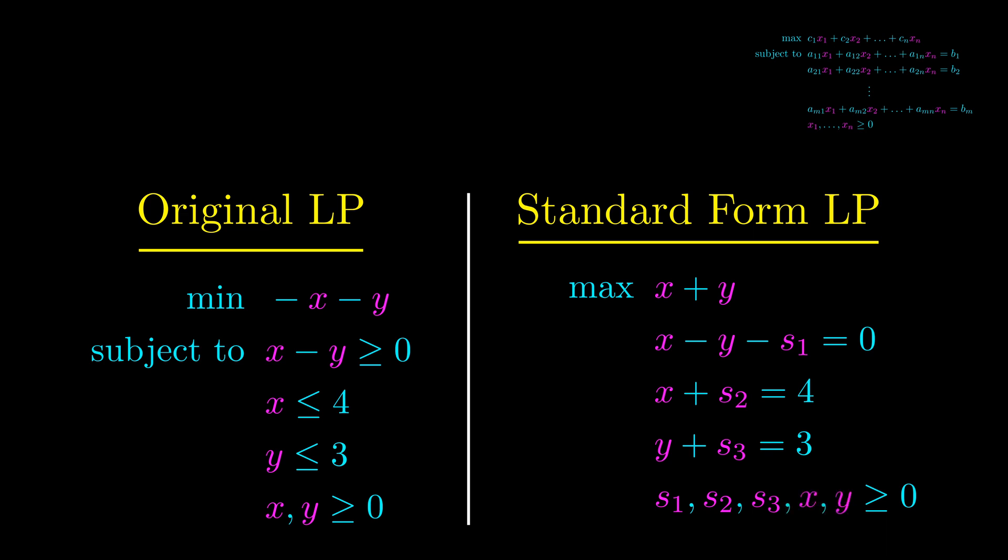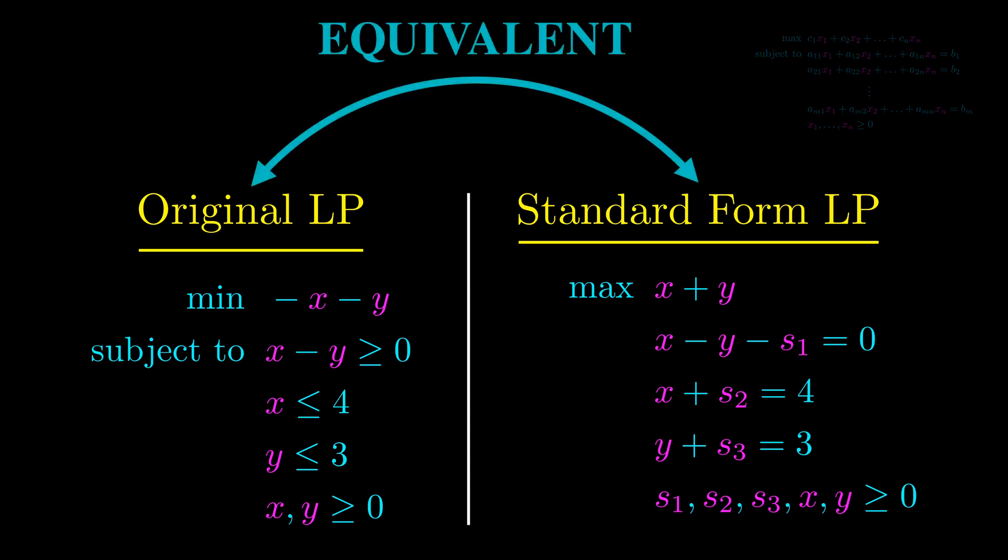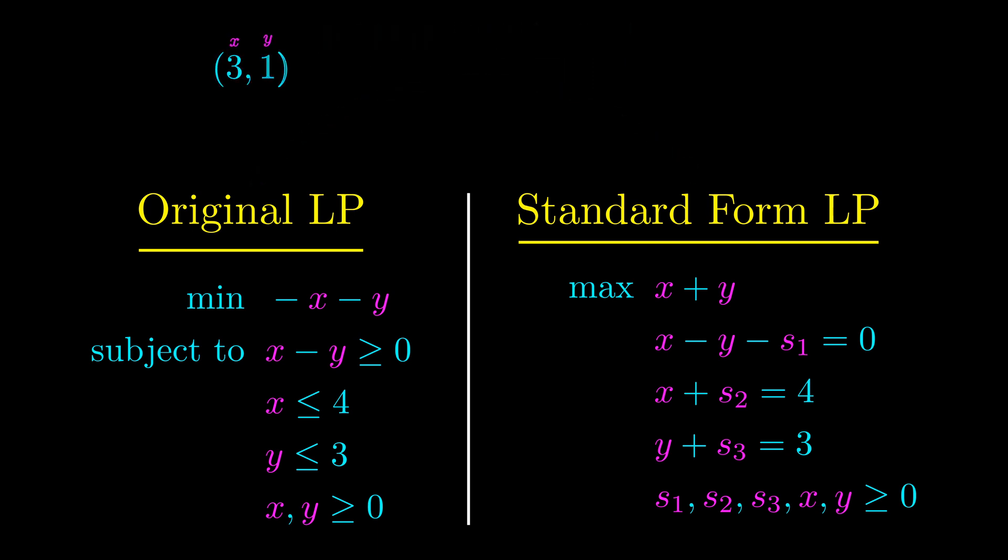Finally, x and y are non-negative from before. These two problems are equivalent in the sense that we can transform a feasible point from one to the other, and vice versa. Also, the optimal objective value is the same for both. For example, let's take the point x equals 3, y equals 1. This is feasible in the first problem, and you can check that it satisfies all of the constraints.